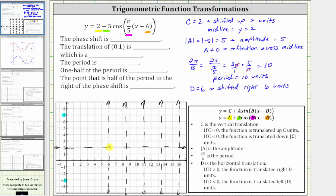Starting at x equals six, following the pattern of the basic cosine function with the reflection, we will start at a minimum, go back to the midline, up to a maximum, back down to the midline, and back down to a minimum. Now we can graph one period of the given cosine function, which would look like this.